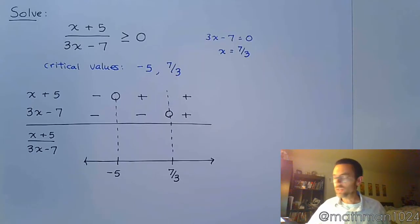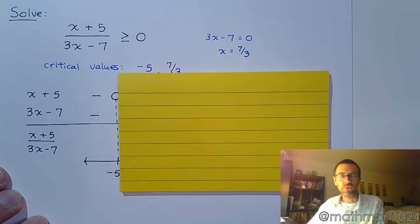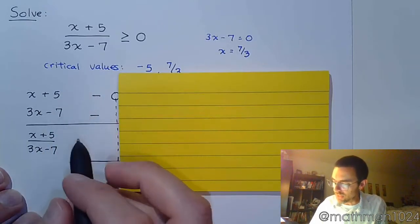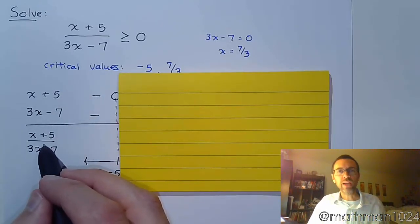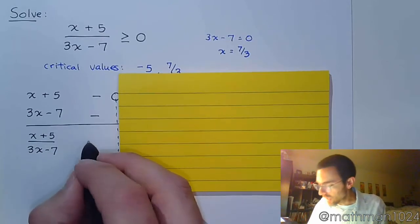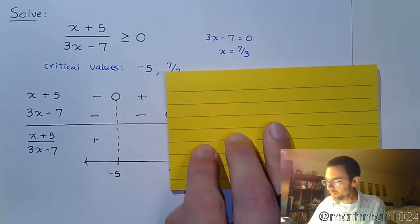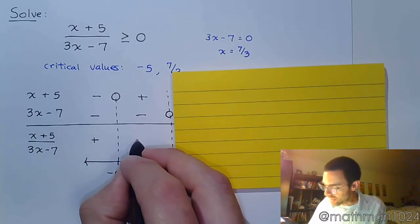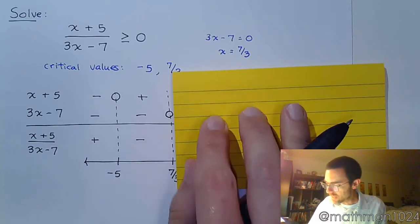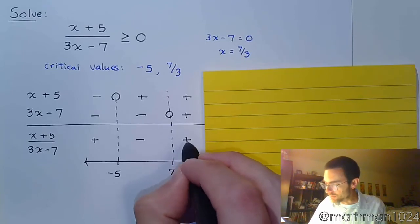Region by region, let's see what we have. In the first region, you have two negative factors — and even though this is division, they're still considered factors — so two negative factors make that positive. Positive over a negative makes this region negative, and then two positives makes that positive when you do the division.